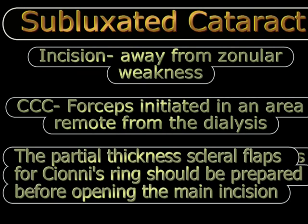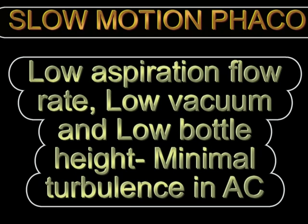Some key tips to remember: the incision is placed away from the area of zonular weakness; the capsulorrhexis is initiated with forceps in an area away from the dialysis, bearing in mind that counter-traction will be reduced. If using a Cionni ring, partial-thickness scleral flaps for suturing the ring should be made before opening the main wound so the globe does not become hypotonic. Slow-motion phaco should always be performed with low aspiration flow rate, low vacuum, and low bottle height to minimize turbulence in the anterior chamber and stress on the zonules and capsular bag.